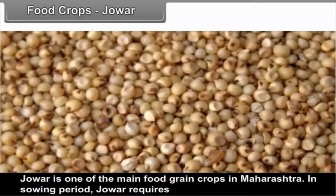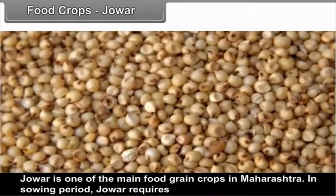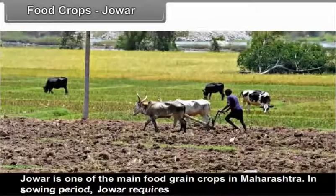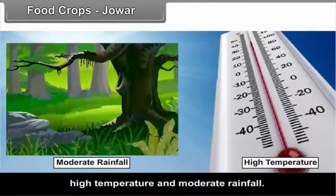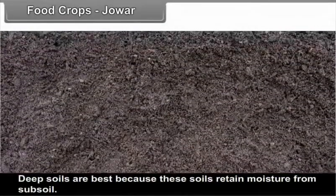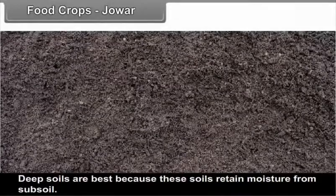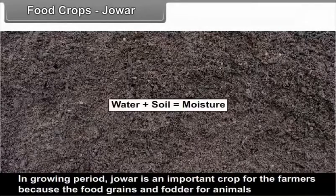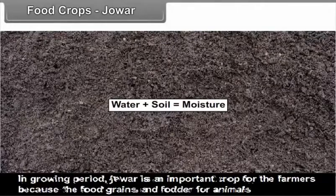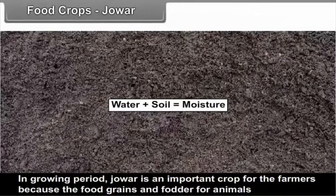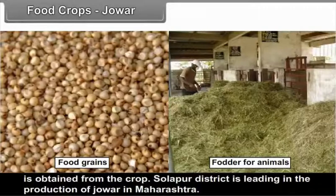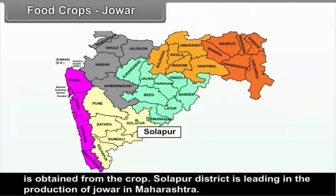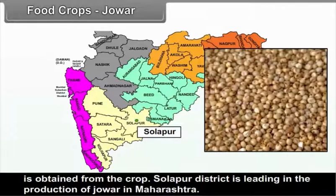Jowar is one of the main food grain crops in Maharashtra. During the sowing period, Jowar requires high temperature and moderate rainfall. Deep soils are best because they retain moisture from the subsoil. Jowar is important because both food grains and fodder for animals are obtained from this crop. Solapur district is leading in the production of Jowar in Maharashtra.